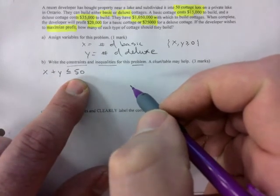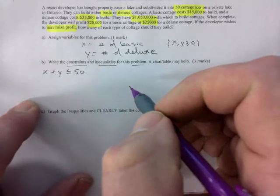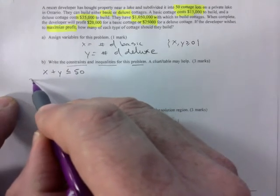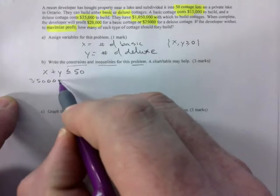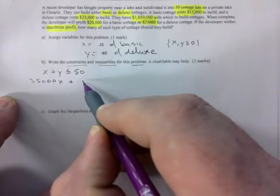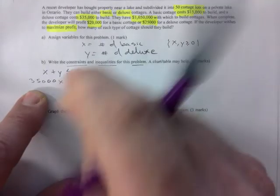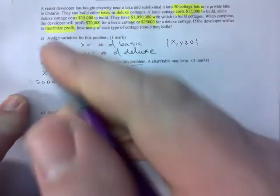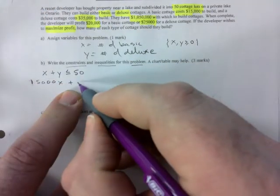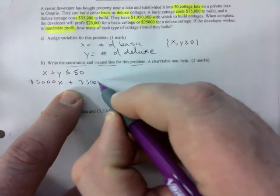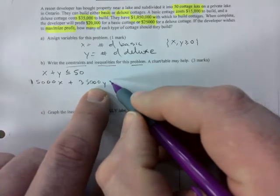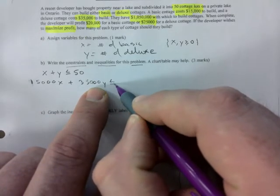You can only build up to 50 cabins all together, that's the one you should have picked up there. And the other one is the cost, right? $15,000 for basic and $35,000 for a deluxe cabin.